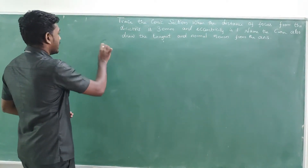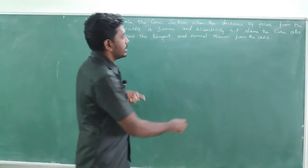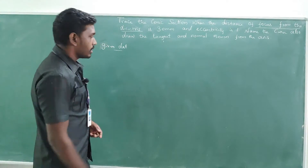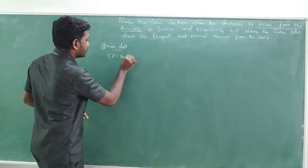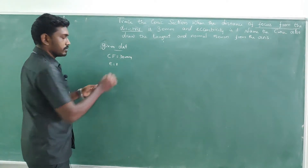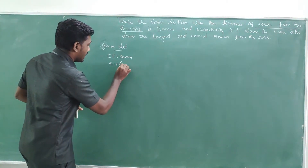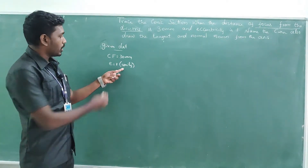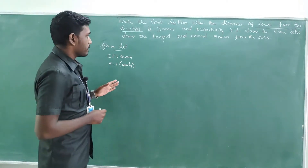The given data: the distance of focus from the directrix, that means CF, is given as 30 mm. And the eccentricity is 1 — in other words, I can say eccentricity as unity, which is equivalent to 1.